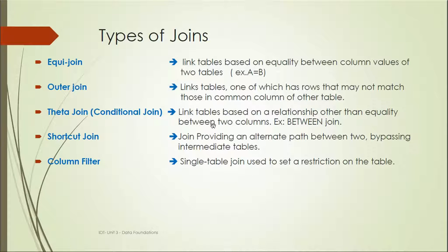A theta join is a new join type in the Information Design Tool based on conditions other than equality — for example, specifying a date range like start date between a certain range using operators like BETWEEN. A shortcut join provides an alternate path between two tables bypassing intermediate tables, so if there are three or four tables, we can join the first and last table and bypass the intermediate ones.